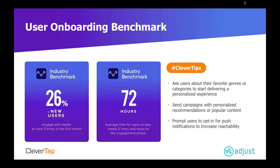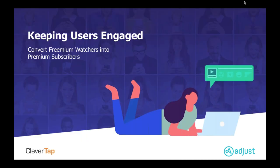Prompt your users to opt in for push notifications to increase reachability — this is the most effective and widely used engagement strategy. Optimizing for users receiving push notifications is a huge driver for engagement. Another key strategy is to convert your freemium watchers into premium subscribers — there are several ways to drive engagement to help you do so.